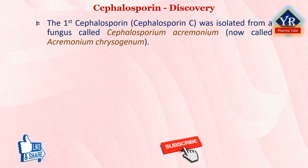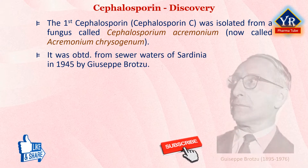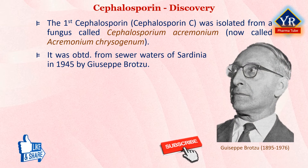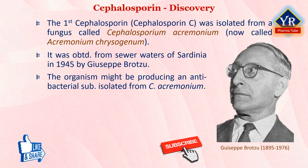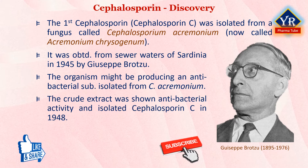The first cephalosporin, Cephalosporin C, was isolated from a fungus called Cephalosporium acremonium, now called Acremonium chrysogenum. It was obtained from sewer waters on the island of Sardinia in 1945 by the Italian professor Giuseppe Brotzu. Brotzu noticed that the waters surrounding the sewage outlet periodically cleared off microorganisms. He reasoned that the organism might be producing an antibacterial substance, and so he collected samples and managed to isolate the fungus Cephalosporium acremonium.